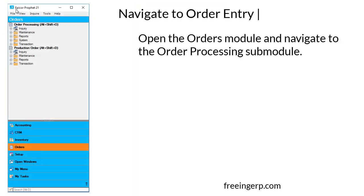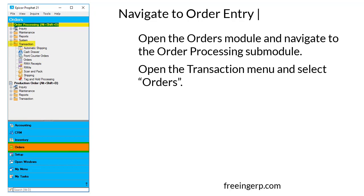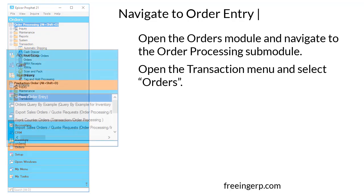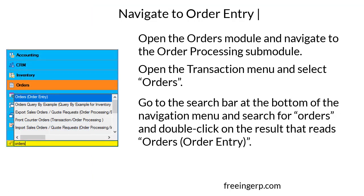To navigate to order entry, first open the Orders module and navigate to the Order Processing sub-module. From there, open the Transaction menu and select Orders. You can also go to the search bar at the bottom of the navigation menu, search for orders, and double-click on the result that reads Orders Order Entry.